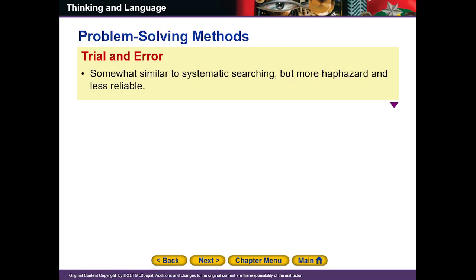Problem solving methods میں پہلا ہے trial and error۔ Trial and error میں آپ کو ایک مسئلہ یا سوال دیا گیا ہو تو آپ ایک طریقے سے حل کرتے ہیں — جواب غلط آئے تو دوسرے طریقے سے، پھر غلط آئے تو تیسرے طریقے سے — شاید صحیح جواب آ جائے۔ آپ try کرتے ہیں اور اگر غلط آتا ہے تو پھر دوسری try کرتے ہیں — یہی trial and error کا مطلب ہے۔